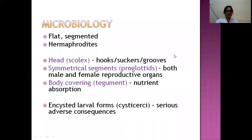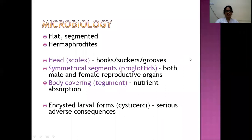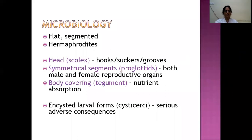The tapeworm itself is comprised of three parts: the head or scolex, which attaches to the primary host either through hooks, longitudinal grooves, or suckers; symmetrical segments also known as proglottids, which contain the male and female reproductive organs; and the tegument, which covers the entire body and is the medium through which nutrients pass into the parasite. They don't have a digestive tract — nutrients are directly absorbed through the tegument via active transport.